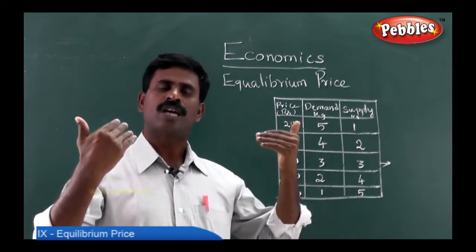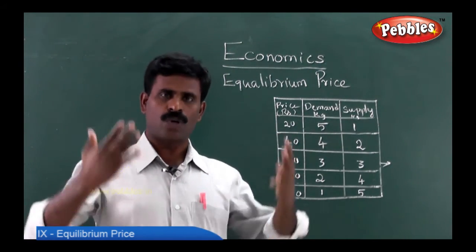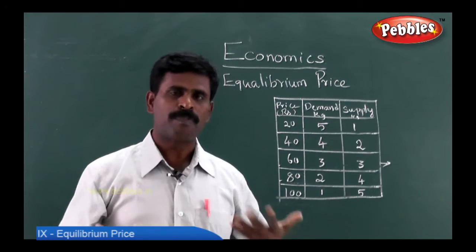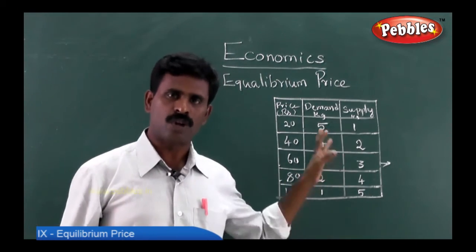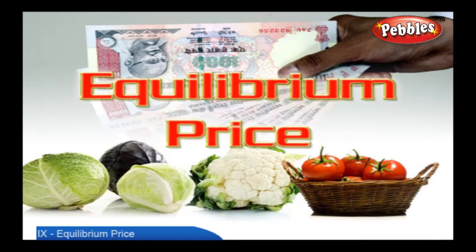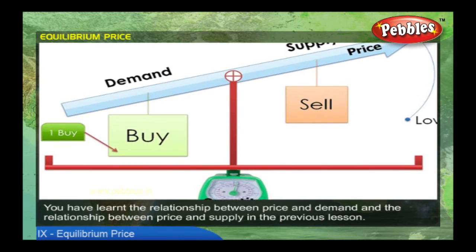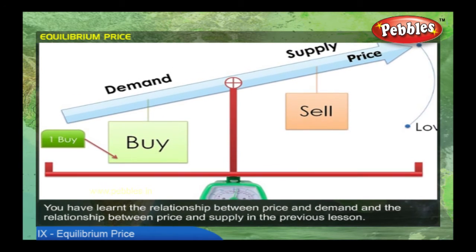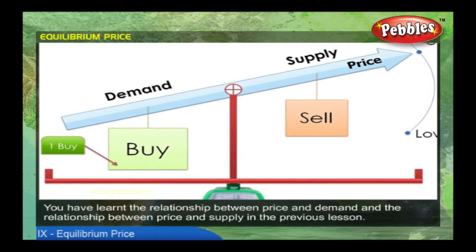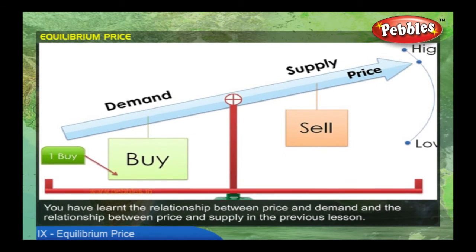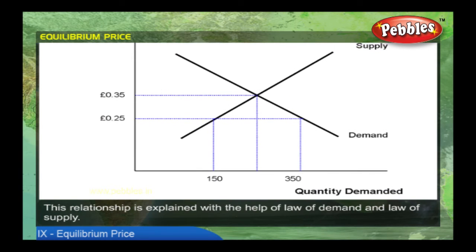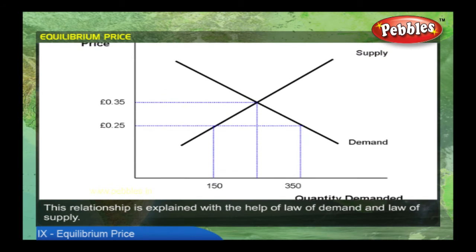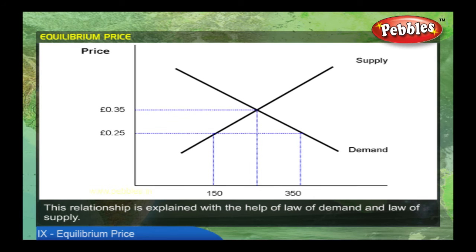That's how the economy continues to survive, economics continues to help people, and the country progresses with this concept. You have learnt the relationship between price and demand, and the relationship between price and supply in the previous lesson. This relationship is explained with the help of the law of demand and the law of supply.